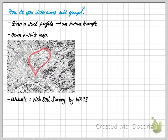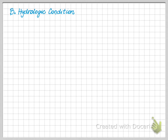Another method is to use a website such as the Web Soil Survey by the NRCS. Once you know your soils group, you need to determine your hydrologic condition. A hydrologic condition describes your cover.